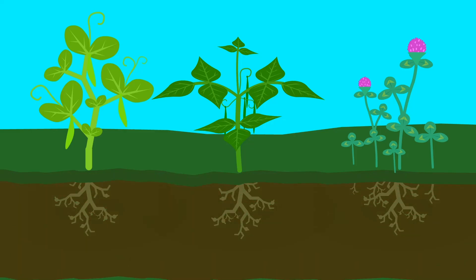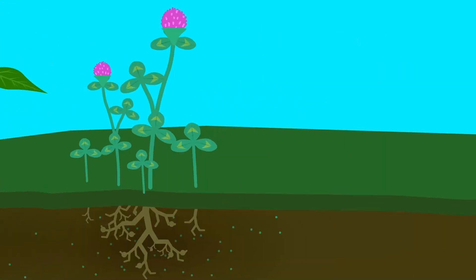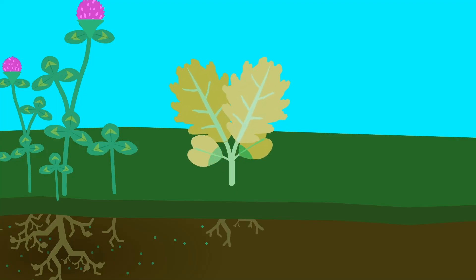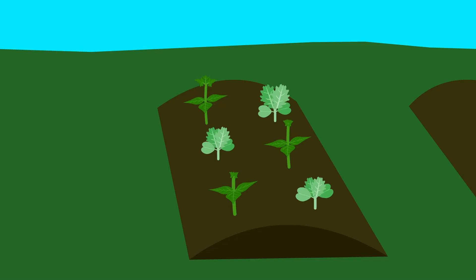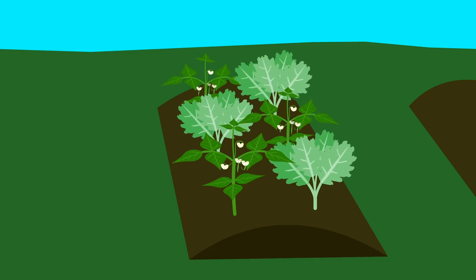They increase the level of nitrogen in the soil, which plants need to produce protein so they can grow and chlorophyll so they can photosynthesize. One way to use this in the garden is to interplant nitrogen fixers with other plants that need a lot of nitrogen.